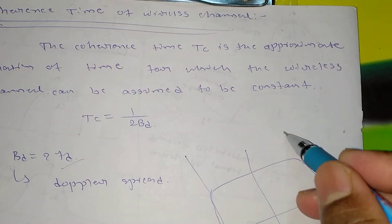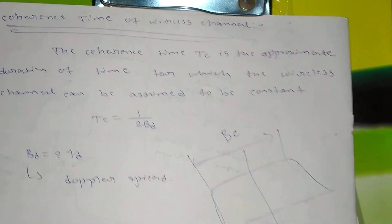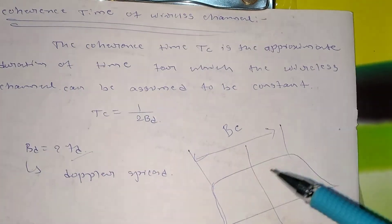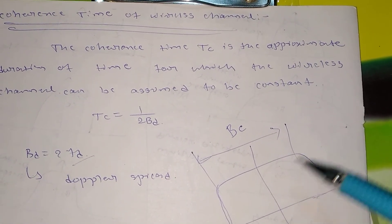And this is the coherence bandwidth. Coherence bandwidth is denoted as BC. So if you don't know what is BC and coherence bandwidth, then you can definitely check the playlist.